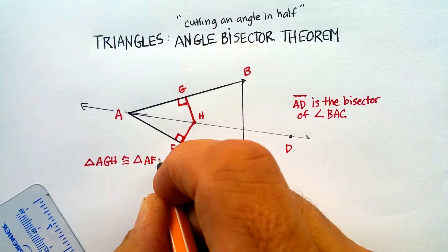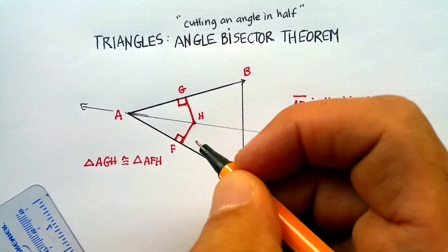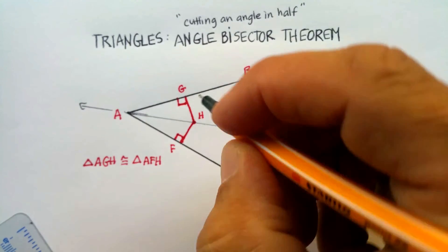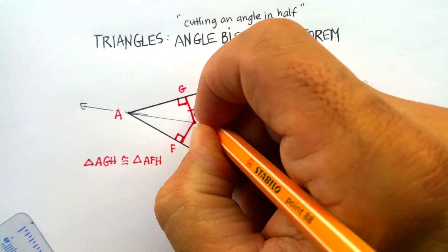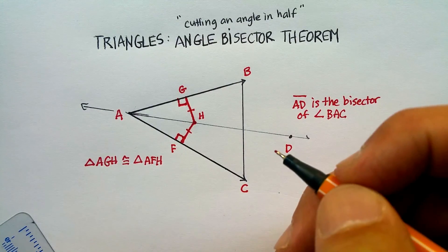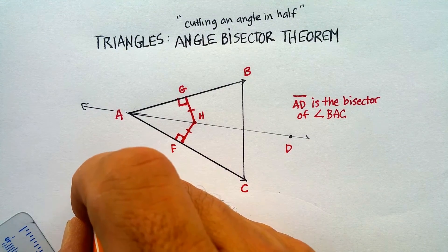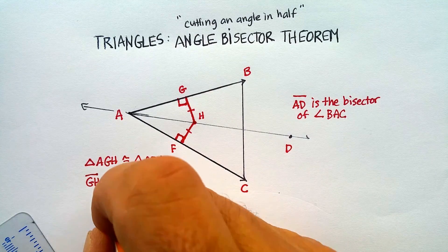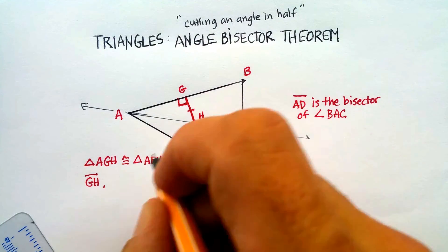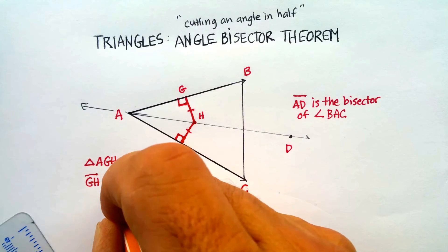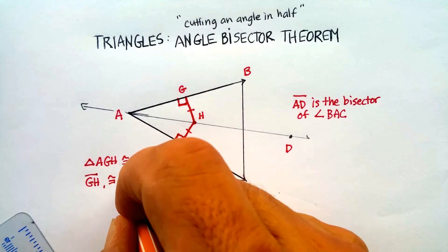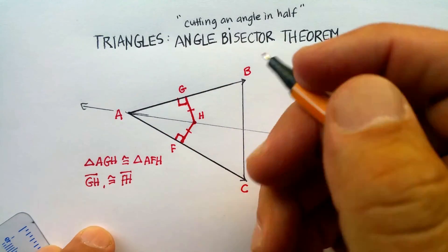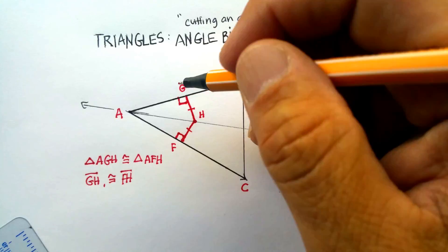That's one property. The closest point from this line here, this line segment and this line segment are equidistant. So I could say line G-H and line F-H are congruent. So those would be exactly the same. Now notice what that means.